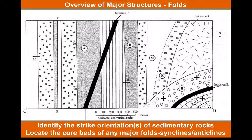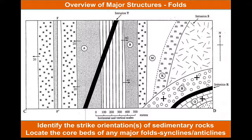We're going to have a look at this really quite simple geological map to see how we can unpick the geological history and what this map would look like if we took a slice through it. Our first job is to look at the orientation of any sedimentary rocks that are here — in particular, can we see the core of any major folds? That's where we get some symmetry in beds and where we start to see repetition in sequences of beds.